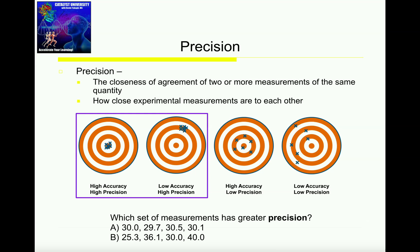So first of all, what is precision? Precision is how close experimental measurements are to one another. So if we look at these two examples right here — you've probably seen these bullseyes before — regardless of where the x's are, notice that in each of these two cases, these x's are really close to one another. So in this case, we have high precision with these x's because they're very close to one another.